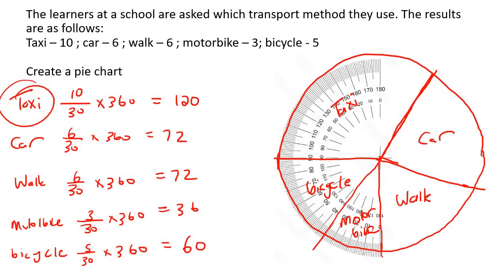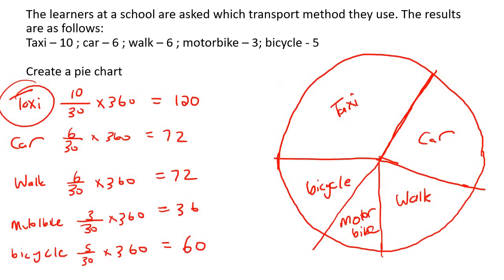If you've done it all correctly, the last section — bicycle — you don't have to measure it separately. Your teacher might want you to label the degrees: 120, 72, 72, 36, and 60.